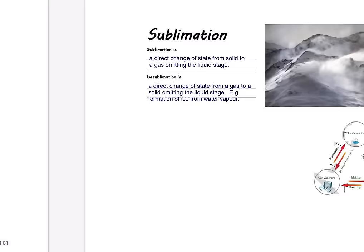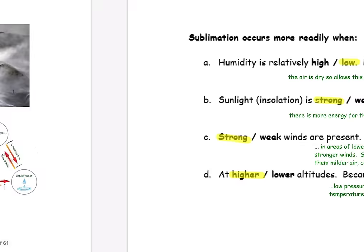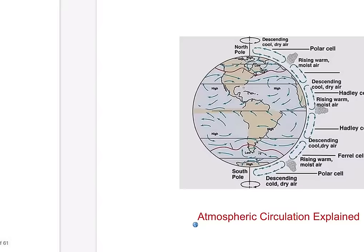This leads us to sublimation and deposition. Sublimation is a direct change of state from solid to gas, skipping the liquid stage. Deposition is the opposite — a direct change from gas to solid, skipping the liquid stage, such as the formation of ice from water vapour. Sublimation occurs most readily when humidity is relatively low and the air is dry, there's strong sunlight providing energy, strong winds, and low pressure — often at higher altitudes.